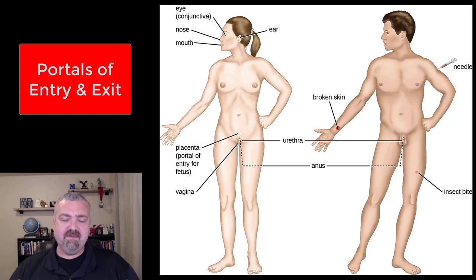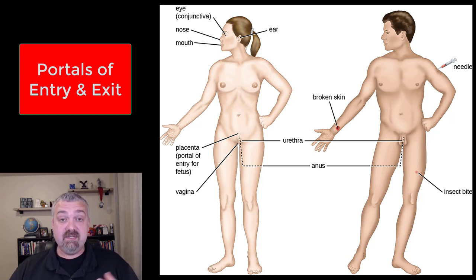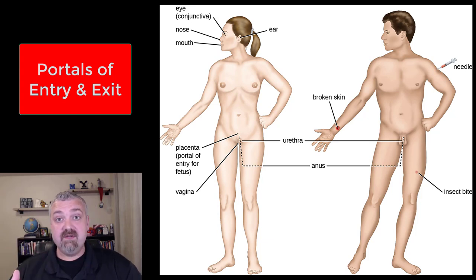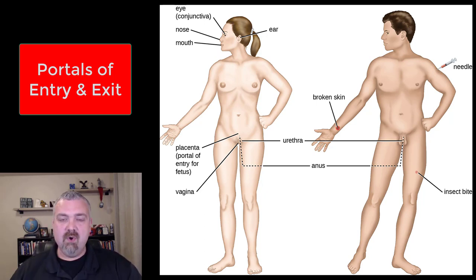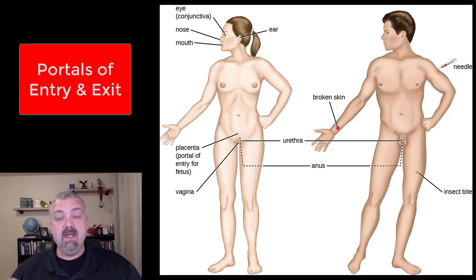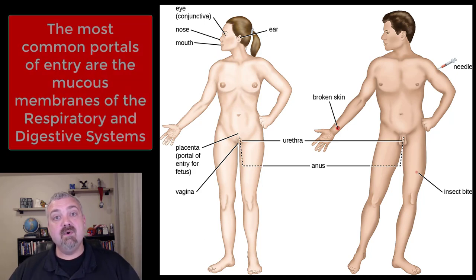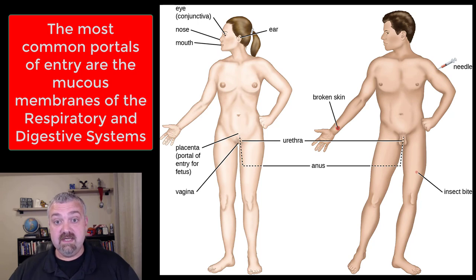I brought this up in the introductory video. The portal of entry is just the way in. Organisms generally have preferred portals of entry. The portal of entry they prefer is usually the one that is closest to the cell type where they are going to do their damage, unless they are an organism whose goal is to get into your bloodstream and then they can travel anywhere. But the most common portals of entry — and you should know these — would be the mucous membranes.